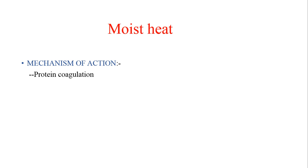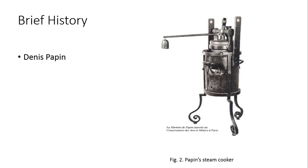The next topic is moist heat. The basic principle is that moist heat leads to the coagulation of proteins. Since proteins are the main functional force behind the cell, when they coagulate, cell function is lost and the cell eventually dies. One of the popular instruments for this is the autoclave.